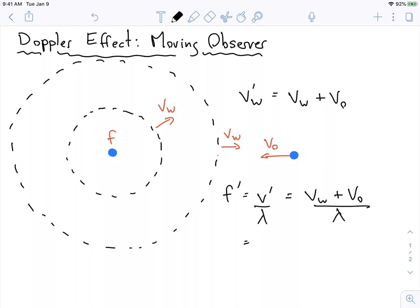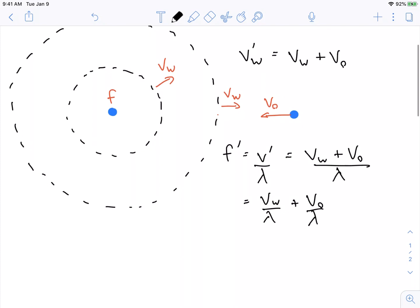So we get the velocity of the wave over the wavelength plus the velocity of the observer over the wavelength. That's the original frequency f. And we know that lambda is equal to the frequency divided by the velocity of the wave.